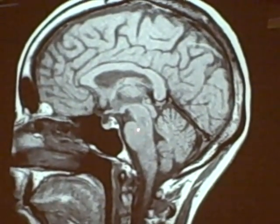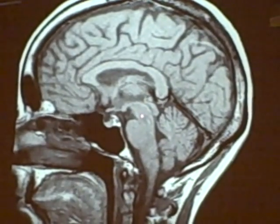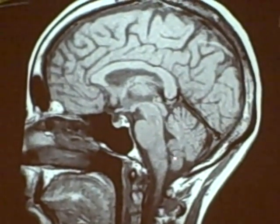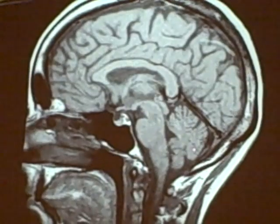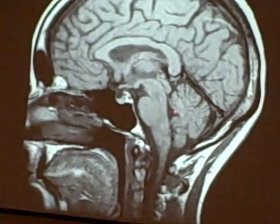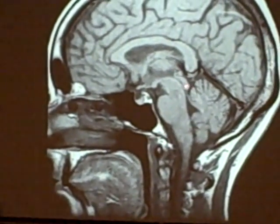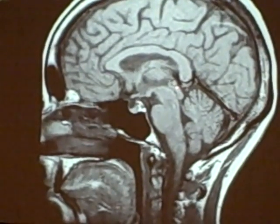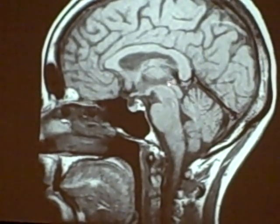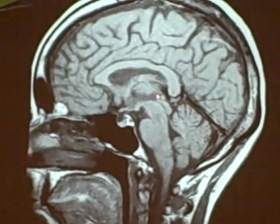Medulla, pons, the tegmentum of the midbrain, the cerebellum back here, the fourth ventricle, and here we see the inferior colliculus, the superior colliculus, and the posterior commissure right above.